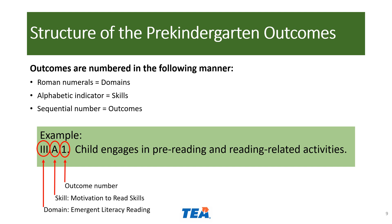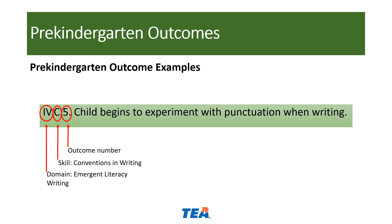Let's take a look at a couple of other examples. In this example, the end of year Pre-K outcome is from domain 4, which is emergent literacy writing. The skill area is C, which is conventions and writing, and this is the fifth outcome in this skill area. So the outcome reads 4C5: child begins to experiment with punctuation when writing.